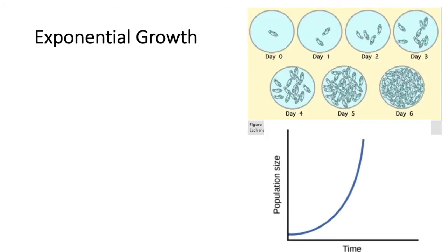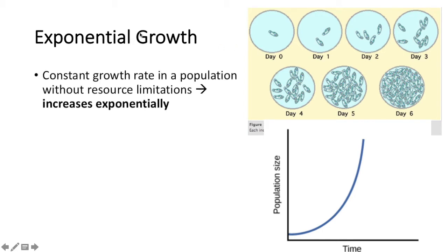You can see that much of that graph — especially from the year 1800 to 2000 — modeled what we call exponential growth. Exponential growth is when a population has a growth rate without any resource limitations, so it's increasing exponentially.